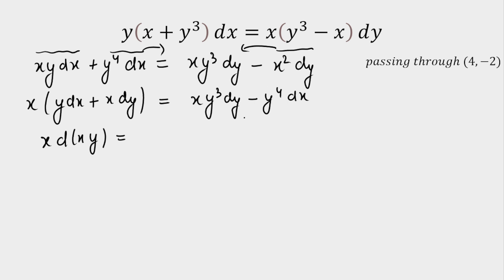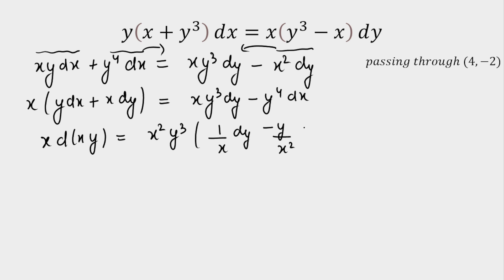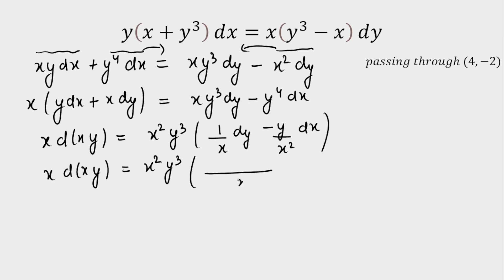We try to form an exact differential from the right side. Taking x²y³ as a common factor, the remaining expression in brackets is (1/x)dy − (y/x²)dx. Taking LCM gives (x·dy − y·dx)/x², which is exactly the quotient rule — this is d(y/x). So we can write: x·d(xy) = (xy)² · y · d(y/x).